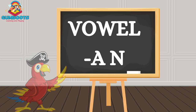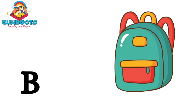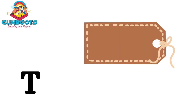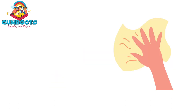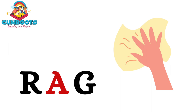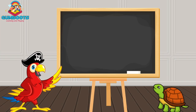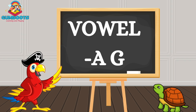Now we will learn more words. B-A-G: Bag. T-A-G: Tag. R-A-G: Rag. S-A-G: Sag. In these words, the ending is with A-G, so these are called AG words.